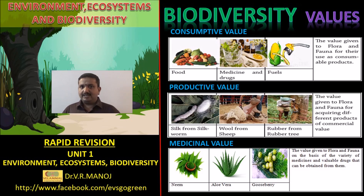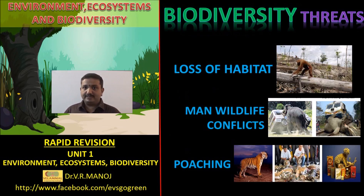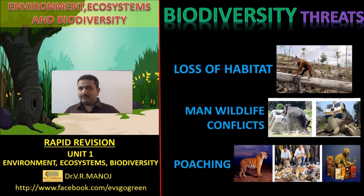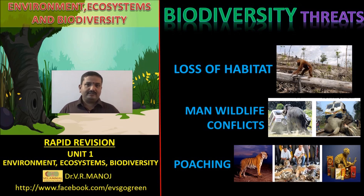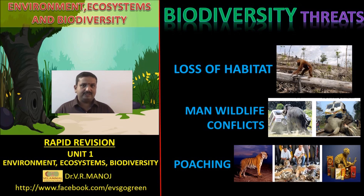Following the definition, types, and values of biodiversity, we have the threats to biodiversity. The major threats are: number one, loss of habitat; number two, man-wildlife conflict; and number three, poaching, which is the illegal trading of wildlife and wildlife-related products.